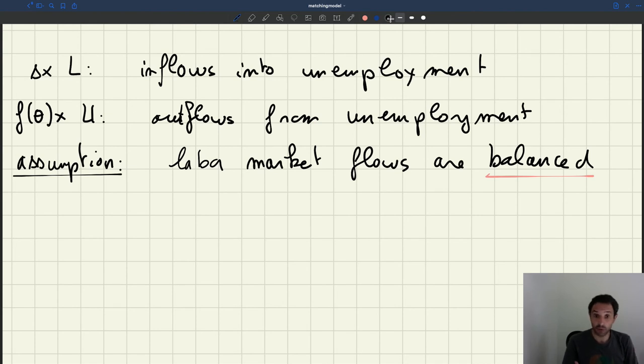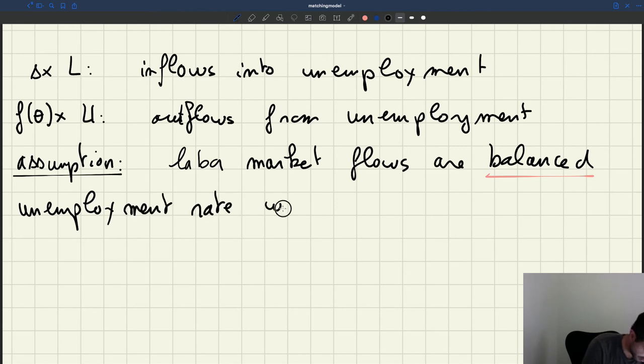And in fact, we can also compute the unemployment rate and some other function of parameters of the model and the labor market tightness. So maybe let's start with the unemployment rate because that's a very important equation we can derive here. So we'll compute the unemployment rate under balanced flows.